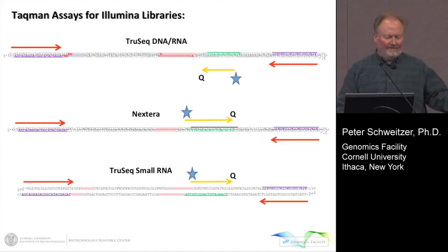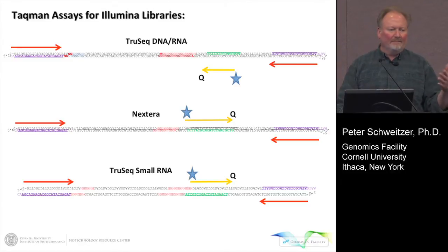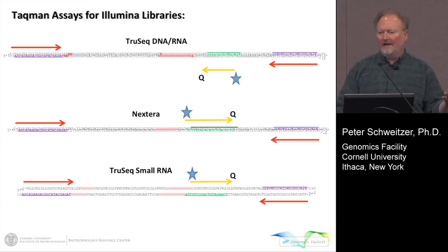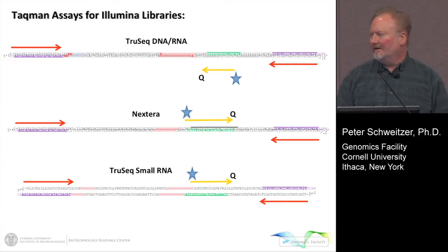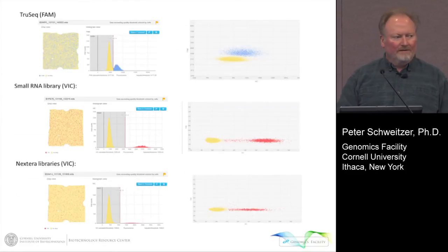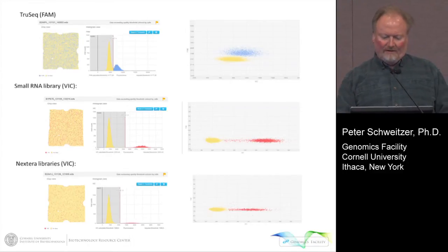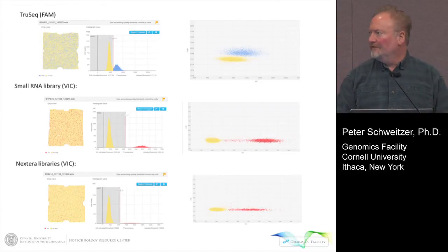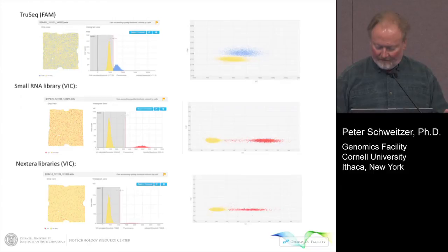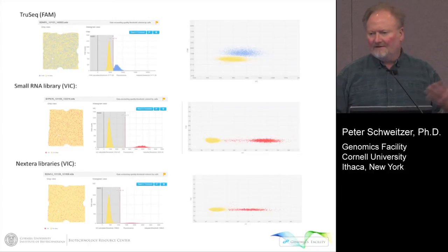With LifeTech's help, we've designed three TaqMan assays — one for each of the major types of Illumina sequencing library: the TruSeq DNA and RNA on the top, next in the middle, and the bottom is the TruSeq small RNA. They differ in a few sequences so we had to design three different assays. All three work. These are examples of what they look like in essentially the absolute quantitation mode — we see a big negative peak and a positive peak. TruSeq was labeled with FAM; the other two were labeled with VIC.